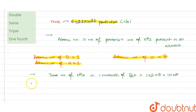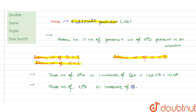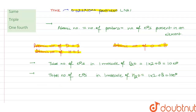Similarly, if we want to find the total number of electrons in one molecule of water (H2O), it will also be 1 + 1 + 8, that is 10 electrons. So one molecule of D2O and one molecule of H2O both contain 10 electrons each.